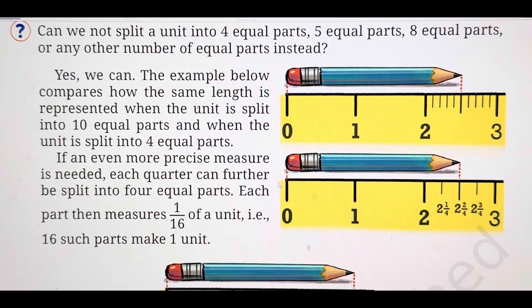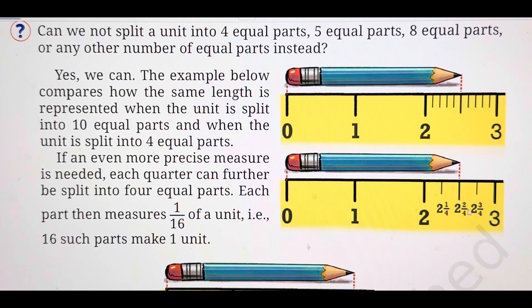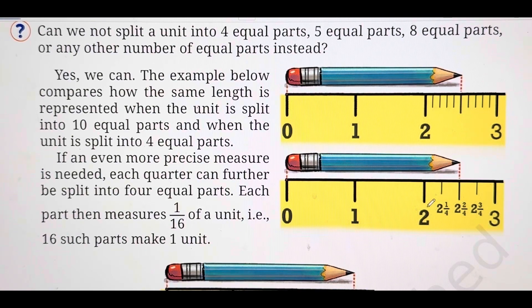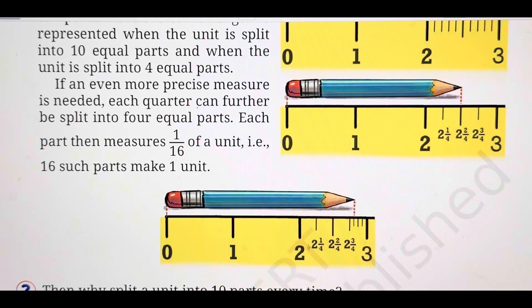Here, if we see the second pencil, there are 4 parts. So we take 2 whole 1 upon 4, this is 2 whole 2 upon 4 — that is 2 and a half — and 2 whole 3 upon 4. And if an even more precise measure is needed, each quarter can be divided further into 4 equal parts, giving you 16 parts. You can see this in the third pencil.